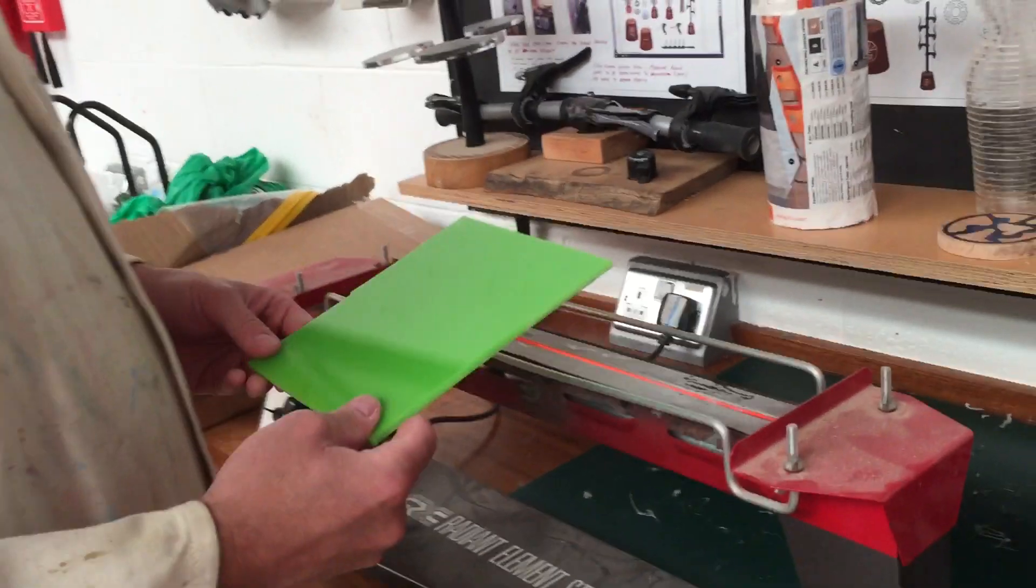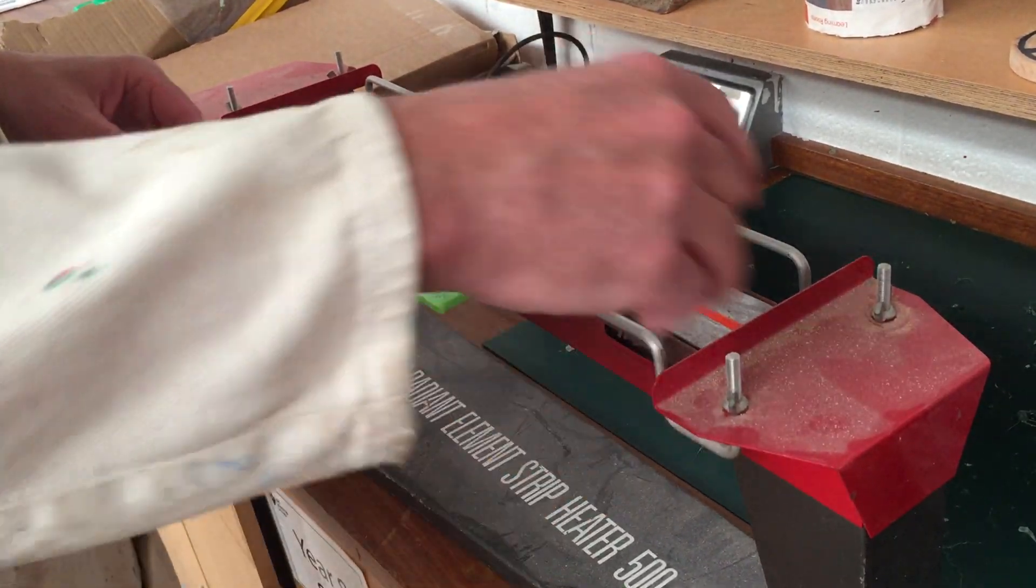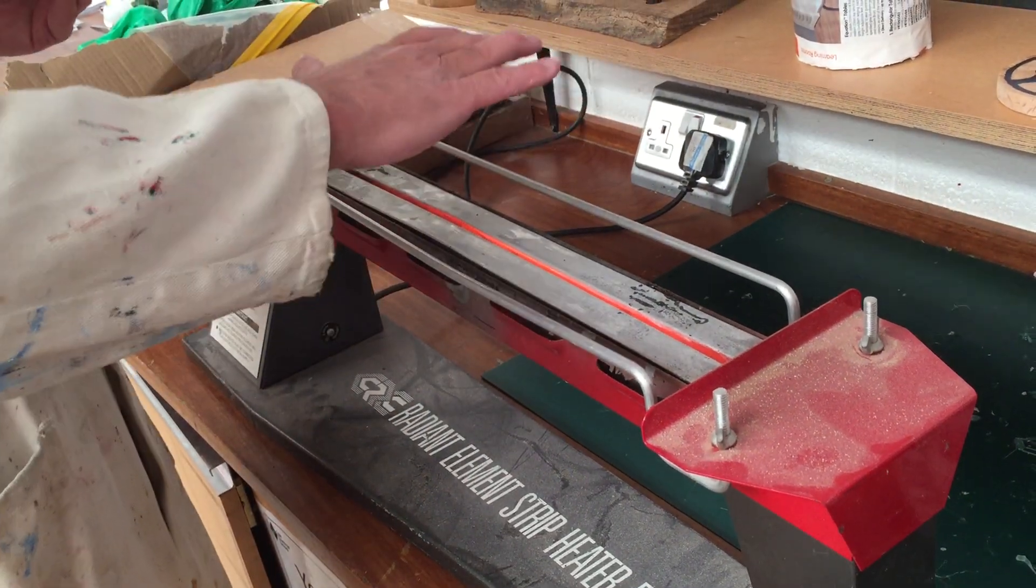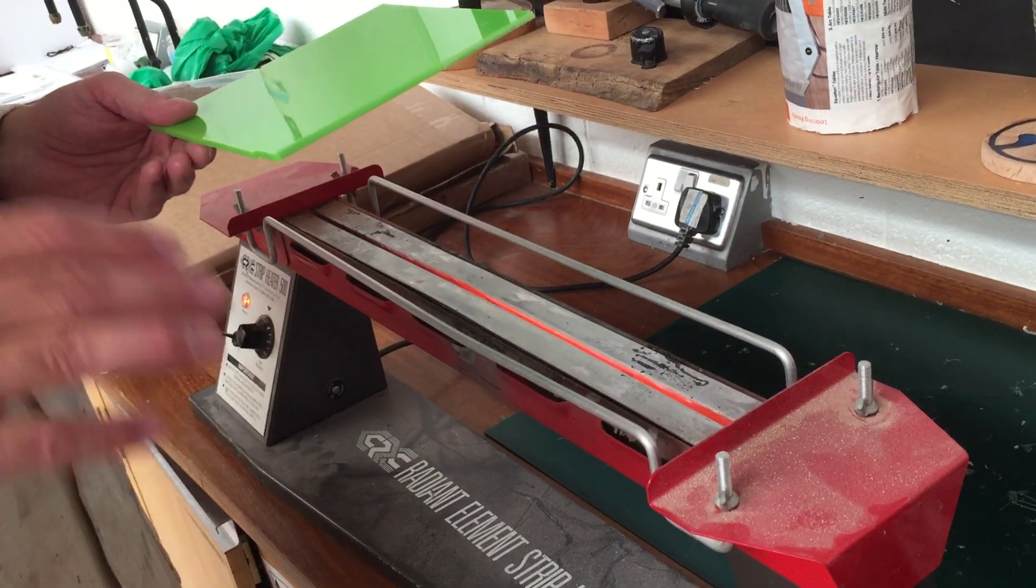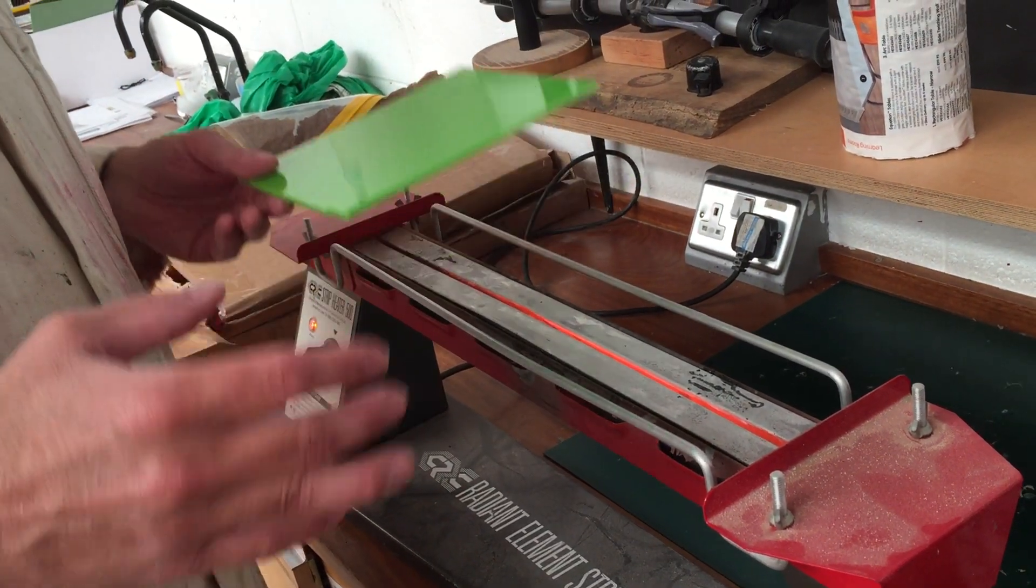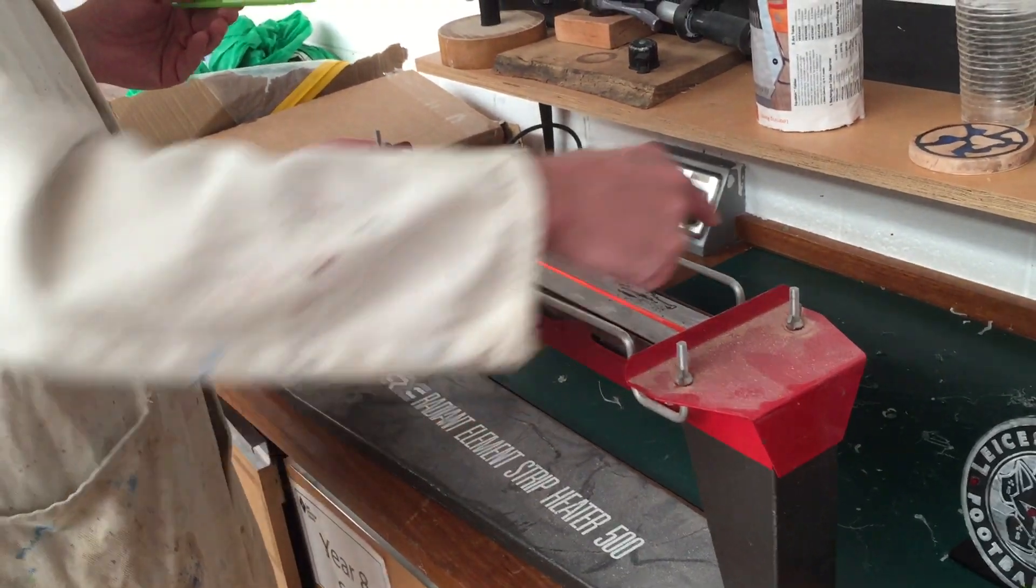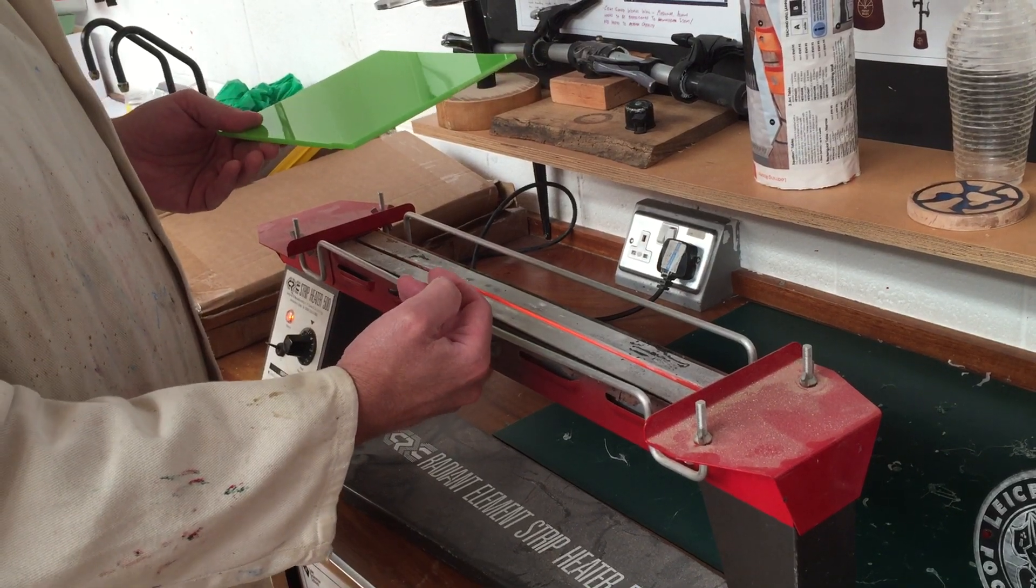Now I'm going to place this piece of acrylic over the element. Now the element is glowing brightly orange. It is very hot, like an electric fire burning away. If I was to touch that, I would be in great deal of pain and probably need hospital treatment. So there are some guide rails here and at the back, and they give me an indication of how close I can get before I burn myself.